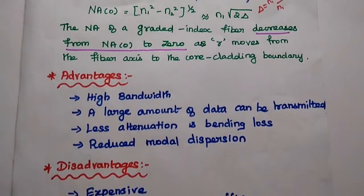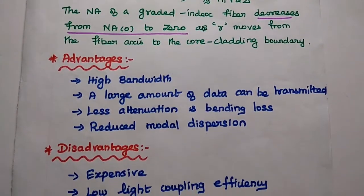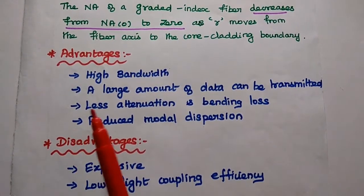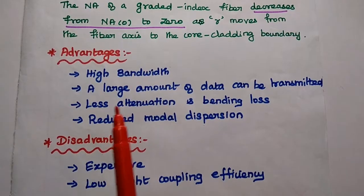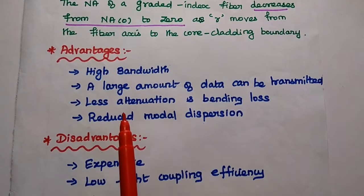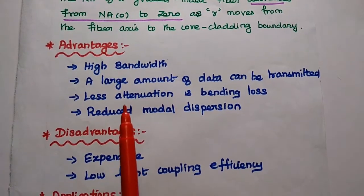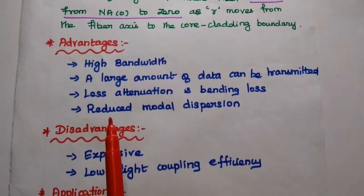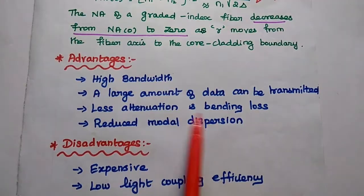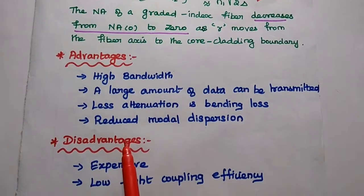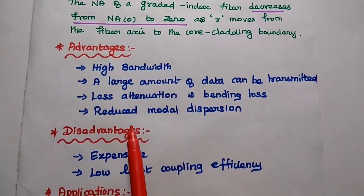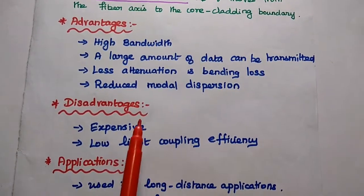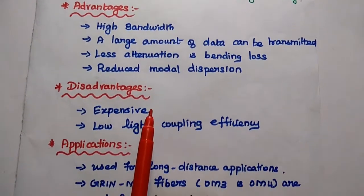The advantages of graded index fiber are: it has high bandwidth, so a large amount of data can be transmitted. It also has less attenuation, low bending loss, and reduced modal dispersion.